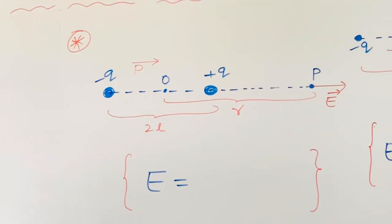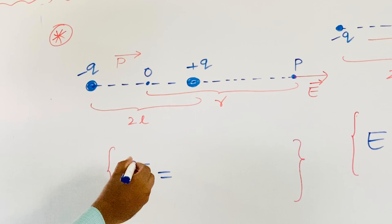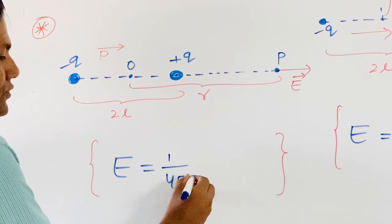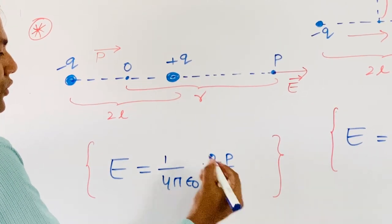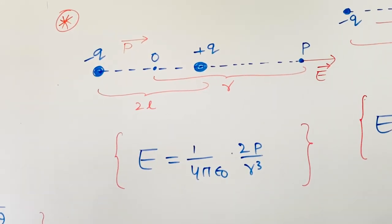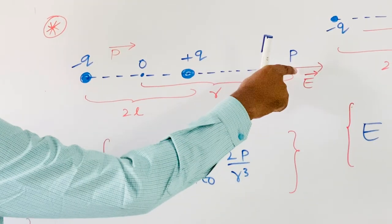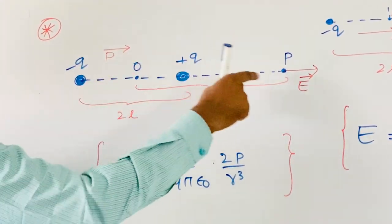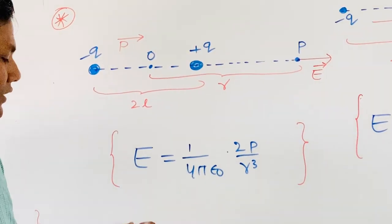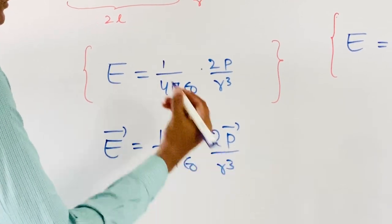Now go to the second key idea. We know the electric field at the axial point P of the dipole, when point P lies at distance R from the center of the dipole, is (1/4πε₀)(2P/R³). If you want to see the derivation, go back to the previous video where we proved it. The direction of Ē is the same as the direction of P̄, so we can write the vector equation: Ē = (1/4πε₀)(2P̄/R³).